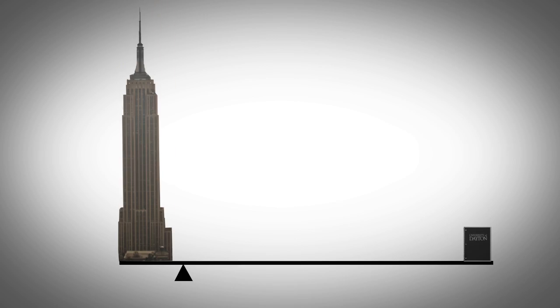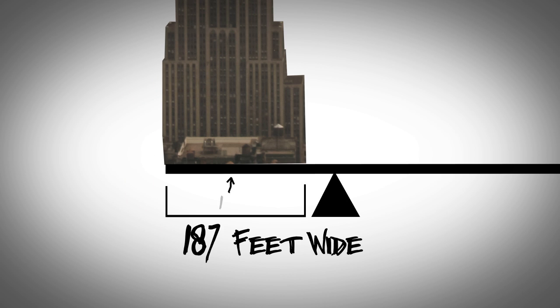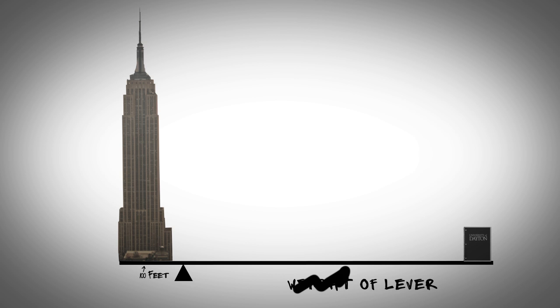Going back to the question of lifting the Empire State Building, we'll have to estimate the weight of the building. It's 187 feet wide, so let's say its center of gravity is 100 feet from the fulcrum. To make it easy, we won't factor in the weight of the lever, which would change our calculation.